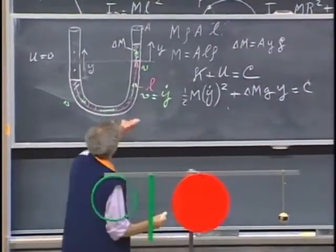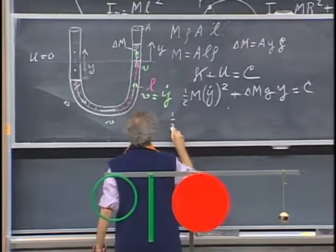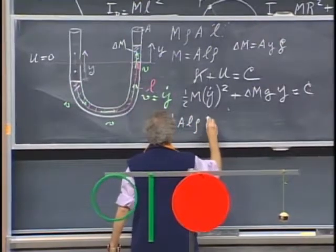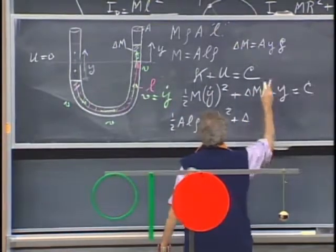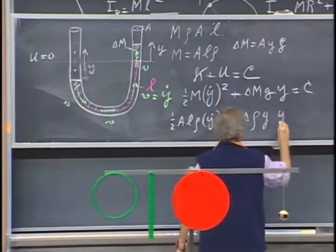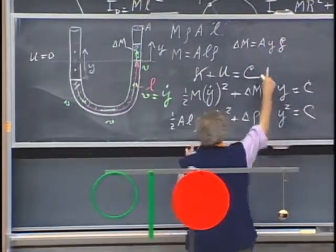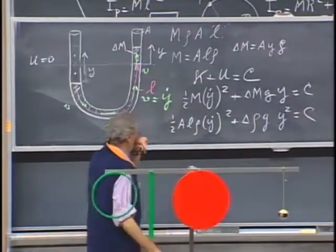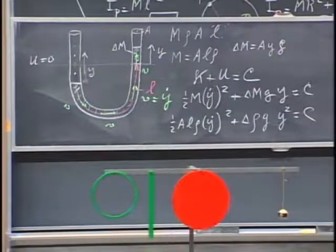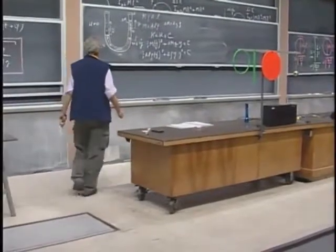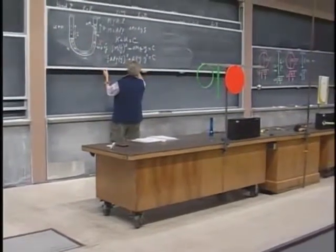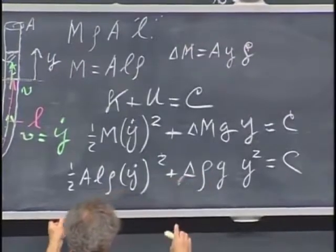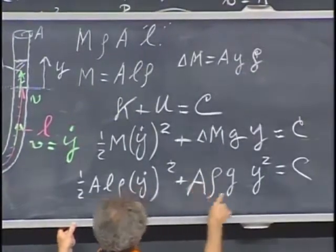So I'm going to substitute in there the A, L, and rho, so I get one-half A L rho velocity squared, plus A rho g, and I get a y squared equals a constant, because I have a y here and I have a y there.